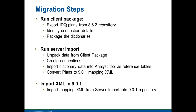Following are the steps to do the migration. First, you will run the client package. The purpose of running the client package on the data quality client box is to export all the data quality plans and package them along with dependent components like connection objects and dictionaries. The output of the client package is a wrap of all the 8.6.2 data quality plans. Then we do the server import, which unpacks the 8.6.2 plans, does internal conversion, and makes them 9.0.1 mappings which can be imported into a 9.0.1 model repository.